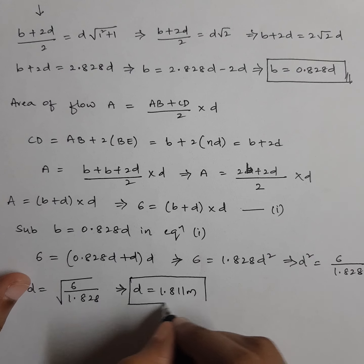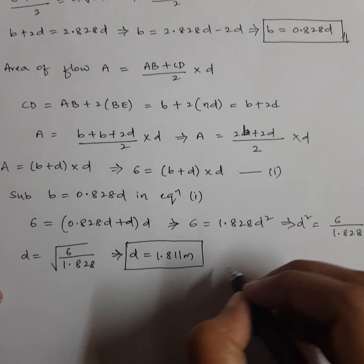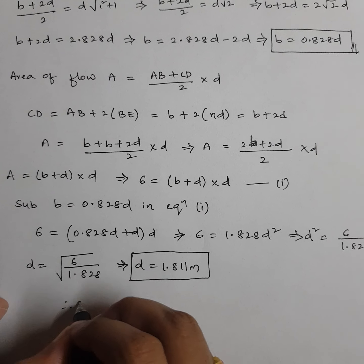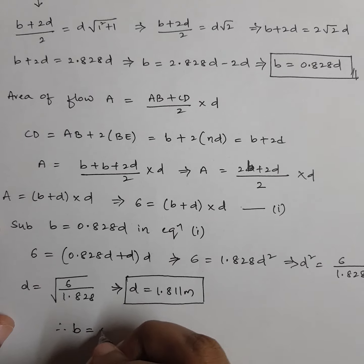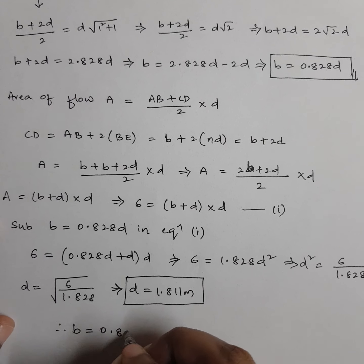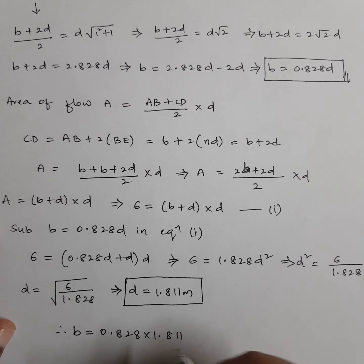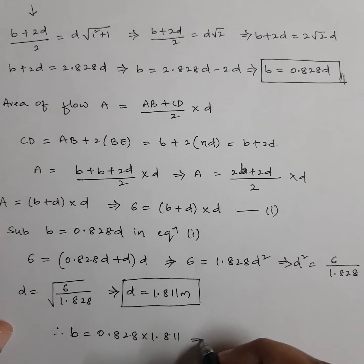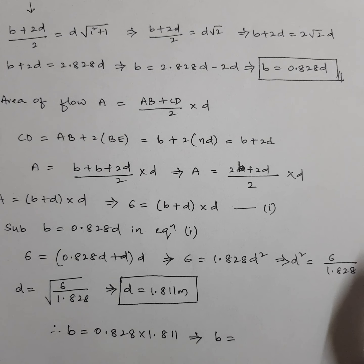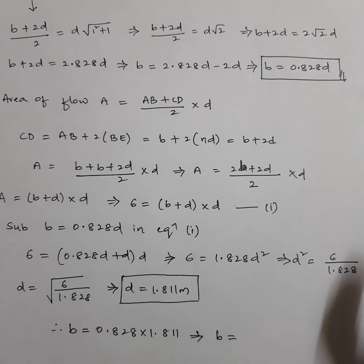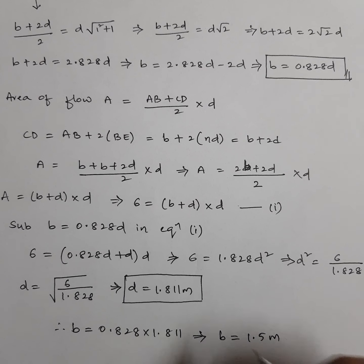With D equals 1.811 meters, we can calculate B: B equals 0.828 into 1.811 equals 1.5 meters.